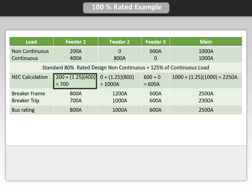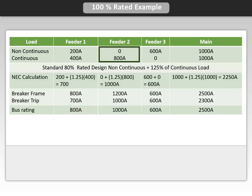Since 700 amps is not a standard frame, we need to use an 800 amp frame with a 700 amp trip. Feeder number 2 has an all-continuous load of 800 amps. When we take this load times 1.25, we have a required rating of 1,000 amps.